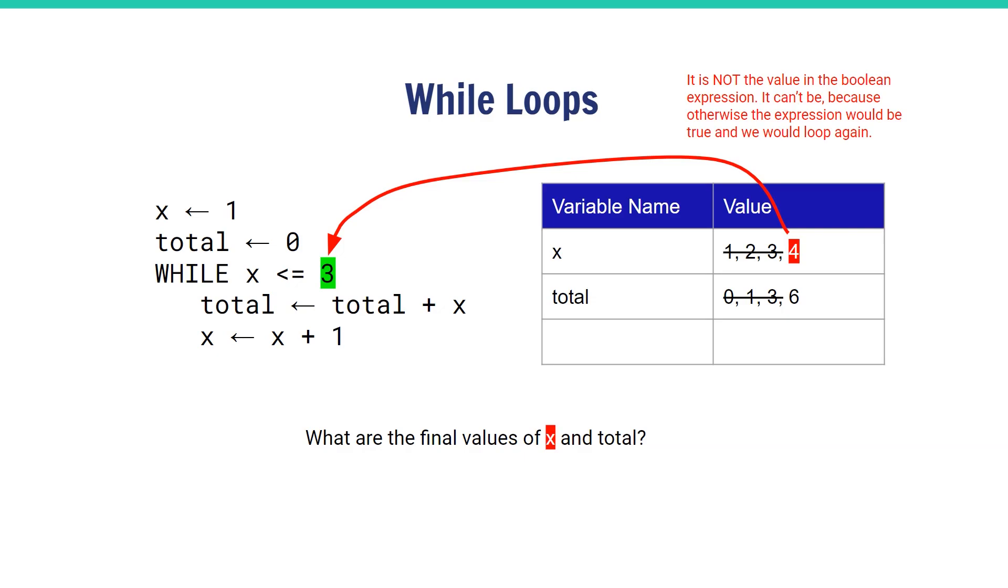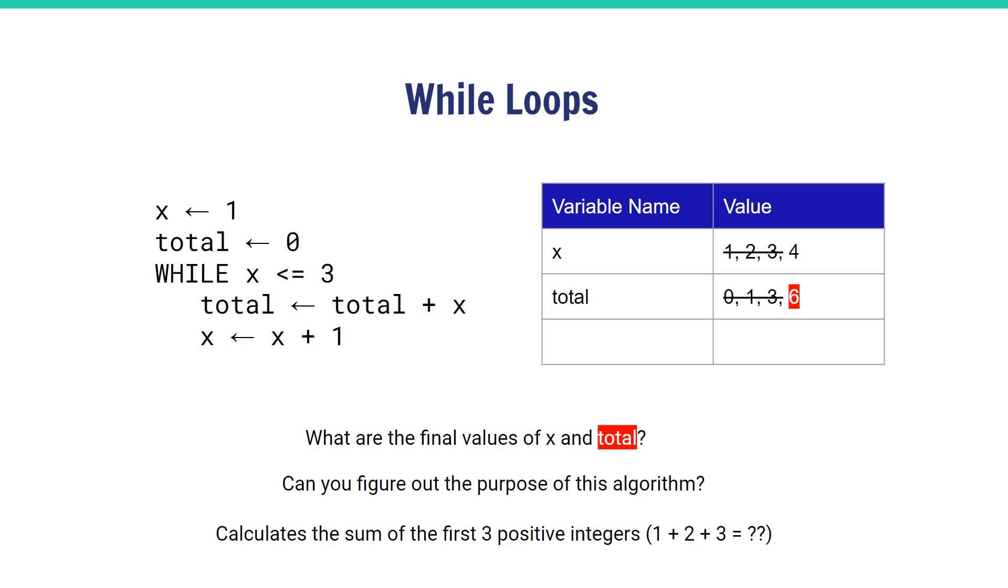Let's look at total. Total here is six, so what this algorithm does is it calculates the sum of the first three positive integers—that's one plus two plus three. That's a very quick overview of while loops.